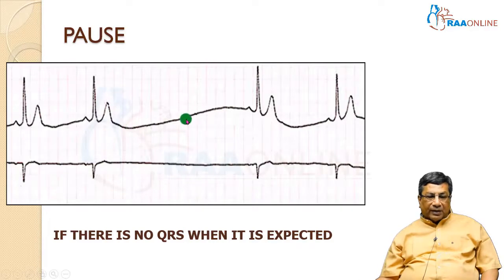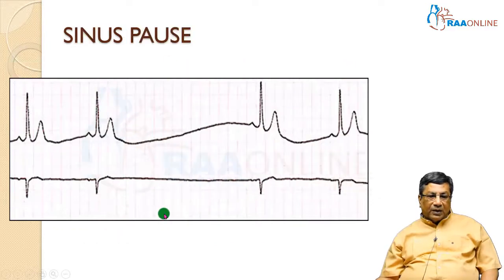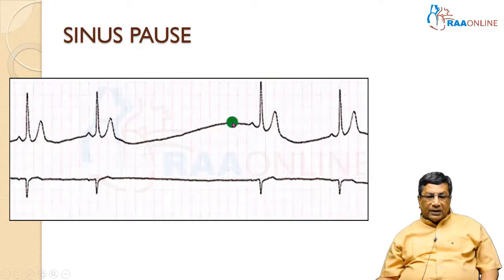We must understand about the pause. The pause is a period in which there is no QRS — suddenly you find no QRS and there is a pause. The next QRS is supposed to come but has not come. Whenever there is a pause, it may be due to a disorder of impulse formation or a disorder of impulse conduction. If the sinus node is not forming an impulse, there is no P wave. So inside the pause, if you don't find any P waves at all, the sinus node is the problem — it is a sinus pause.